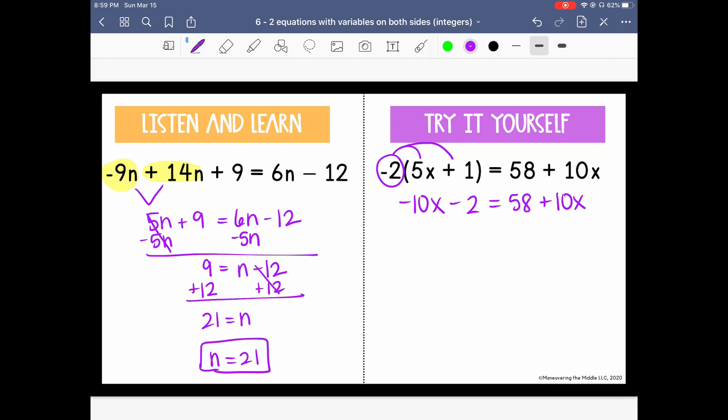I'm going to collect my variables on the right again since 10x is larger than negative 10x. So I'm going to add 10x to both sides so that it will cancel the variables from the left. And now I have negative 2 equals 58 plus 20x.